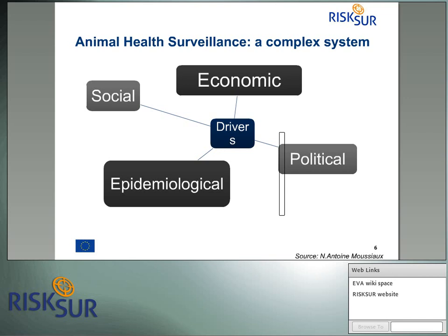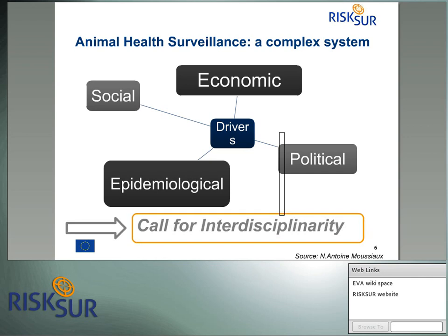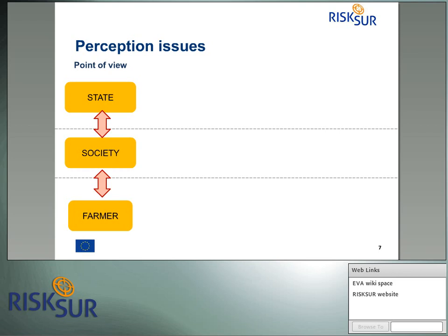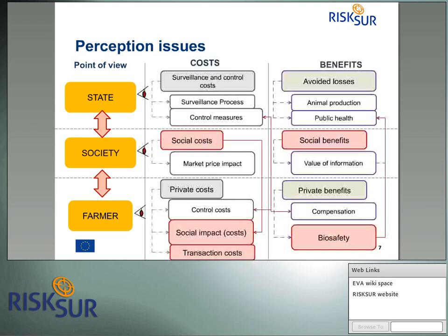Animal surveillance is a complex system affected by many drivers that are not only epidemiological but also social, economic, and political, creating a need for interdisciplinarity, especially in the evaluation process. Moreover, there are perception issues between different stakeholders — the state, society, and farmers — for whom the costs and benefits of animal surveillance are very different. Most of these costs and benefits are often not taken into consideration within the evaluation process, especially the social costs and social benefits.